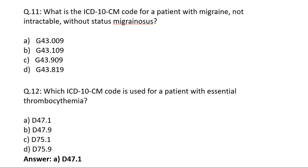Question number eleven: What is the ICD-10-CM code for a patient with migraine, not intractable, without status migrainosus? Write your answer in the comment box. Question number twelve: Which ICD-10-CM code is used for a patient with phobia? The answer is option A, D47.1.